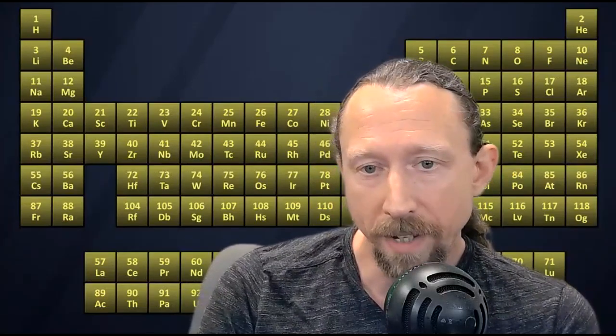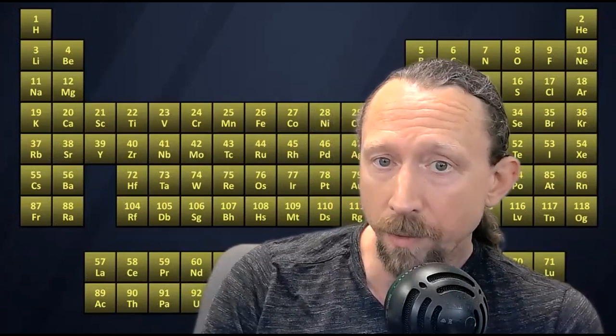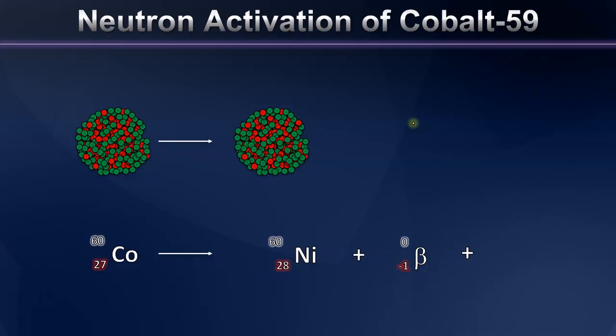In that decay process, not only a beta particle is released, it's also known that cobalt-60 releases two high-energy photons in response to reorganizations of the nucleus. And it's those high-energy photons that we know as gamma radiation. They're very penetrating and they're very dangerous to organisms.